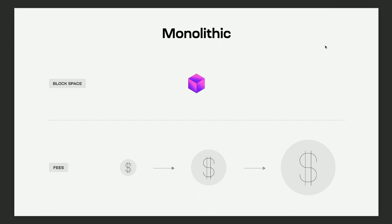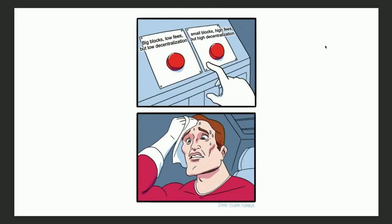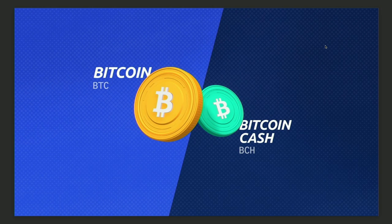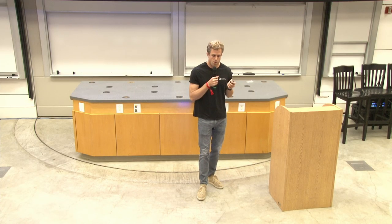With fixed block space, fees increase as more users join — we've seen this play out in ecosystems like Ethereum. You end up in a trade-off: big blocks allow low fees but lose decentralization because fewer users can verify, or you keep blocks small for high decentralization but necessarily have high fees, making the blockchain less usable for everyday people. This debate has popped up throughout crypto history — a good example is the fork between Bitcoin and Bitcoin Cash, where the Bitcoin Cash community wanted to increase the block size, but the Bitcoin core community wanted to preserve the ability for end users to verify the chain.